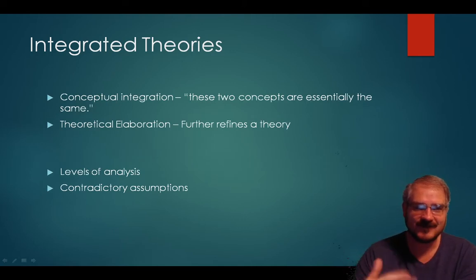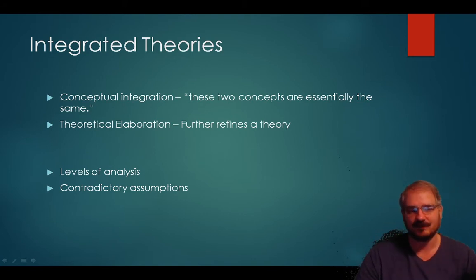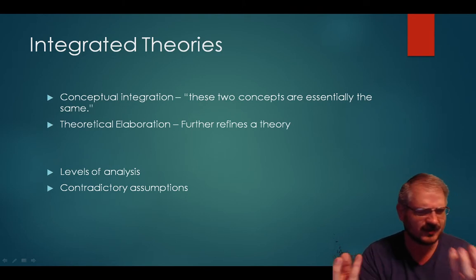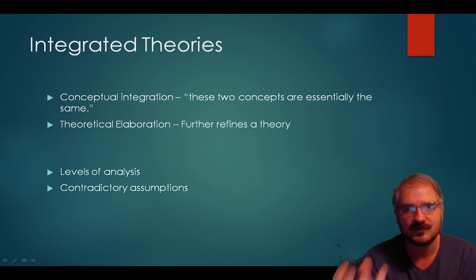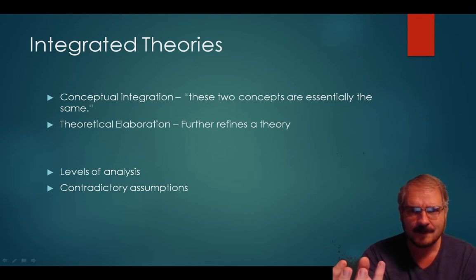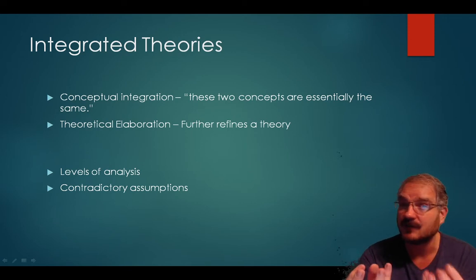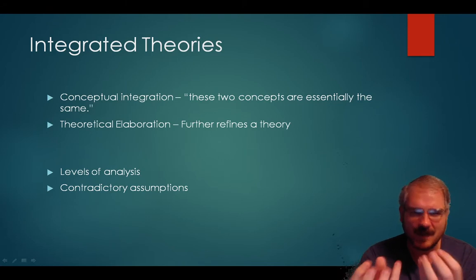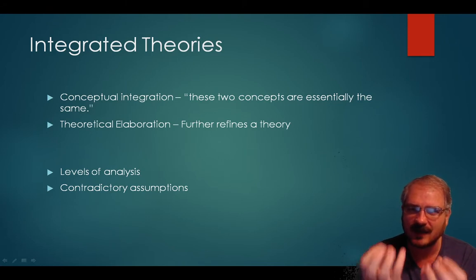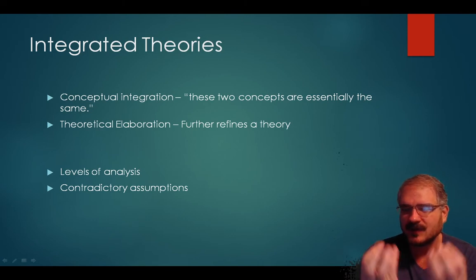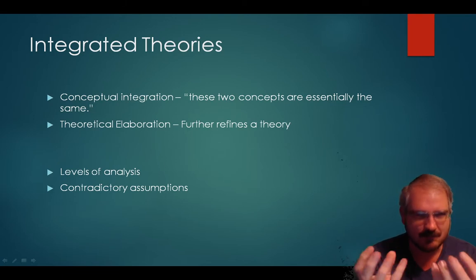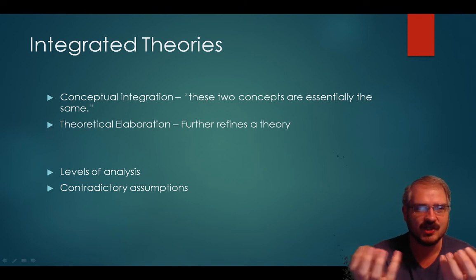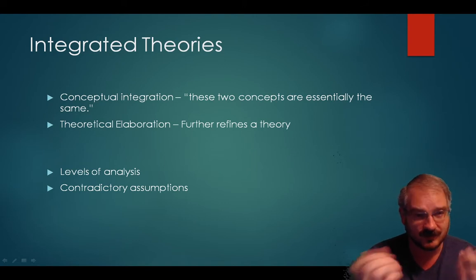One approach to integration is conceptual integration, where two theories are really measuring the same thing. For instance, Agnew's general strain theory measures lack of coping skills, while the general theory of crime measures lack of self-control. You could argue those two are really measuring the same concept — lack of self-control and lack of adequate coping mechanisms — and join them at the hip if you treat them as measuring the same construct.